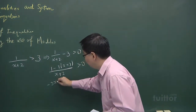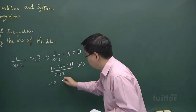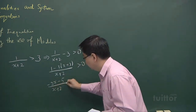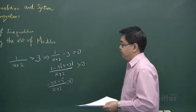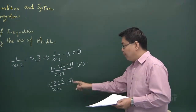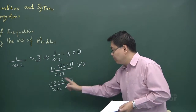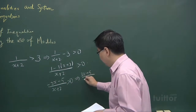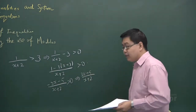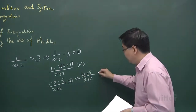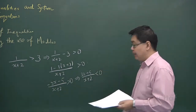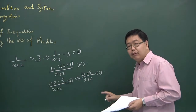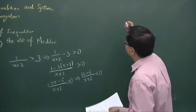Simplifying gives (minus 3x minus 6 plus 1) over (x plus 2), which is (minus 3x minus 5) over (x plus 2) greater than 0. Multiplying throughout by negative 1 on both sides changes the sign, giving (3x plus 5) over (x plus 2) less than 0. We then use the number line method to solve this inequality.